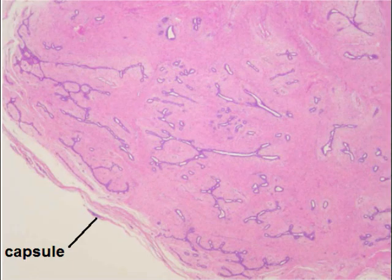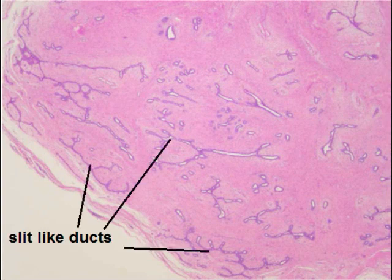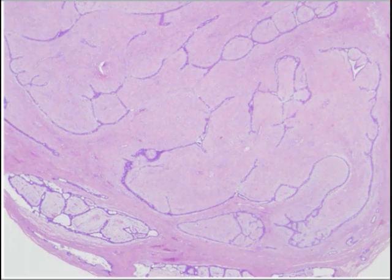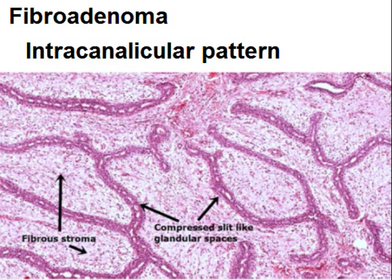There is a fibrous capsule. There are compressed, slit-like ducts with abundant stroma. According to the pattern, this is the intracanalicular pattern of Fibroadenoma, in which the ducts are compressed into slit-like spaces.